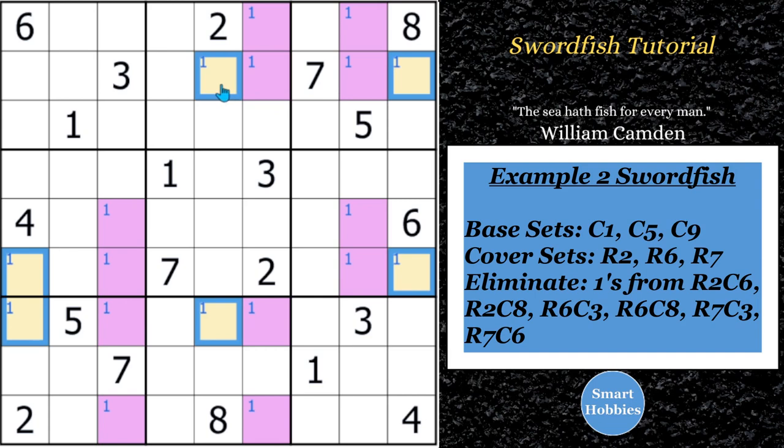So we know that this is a Sudoku swordfish because these ones in the same three columns are at most same three rows. Even though there's only two in each column, it still works as a swordfish. But what we could do, since the base sets are the columns, we could eliminate all the purple ones that are in rows two, row six, and row seven. So you can eliminate all those ones. And so if I eliminate all those ones, they'd be gone.